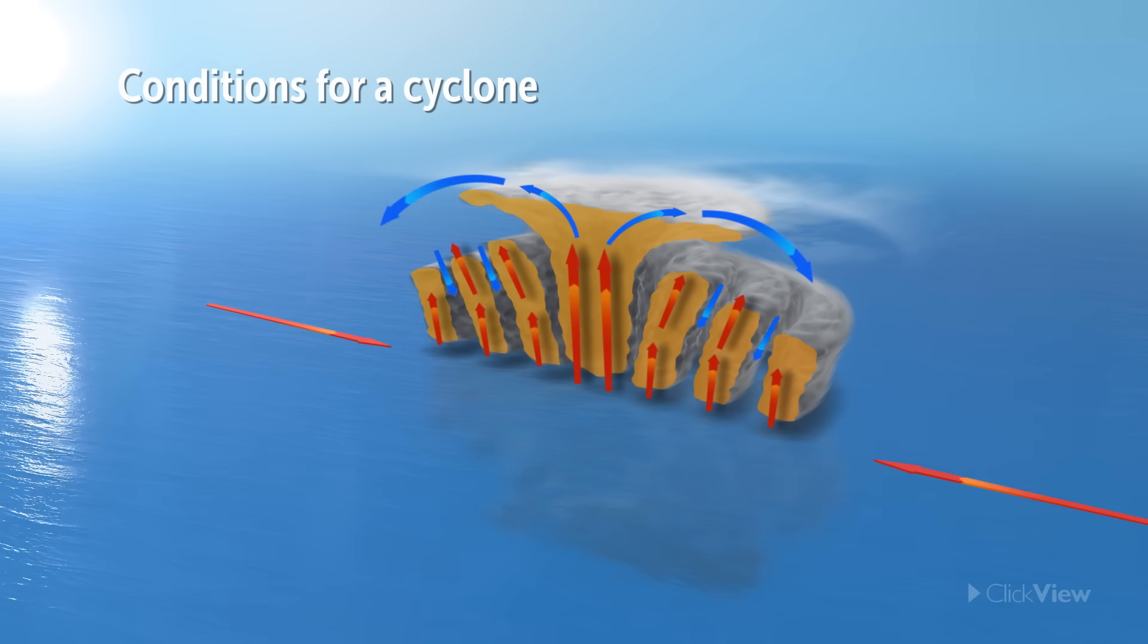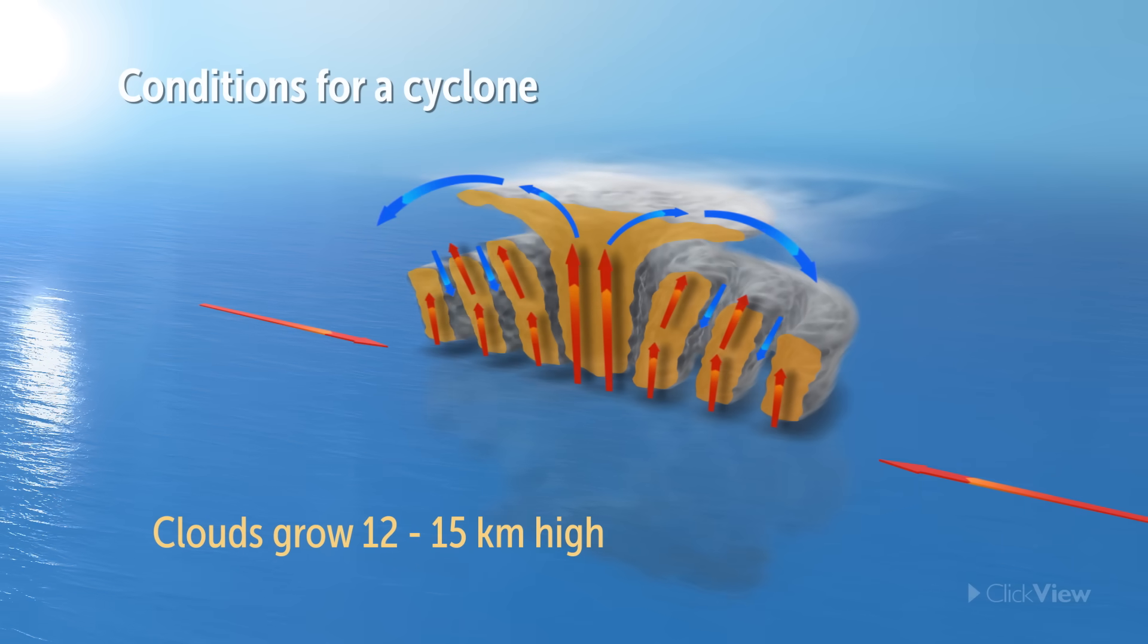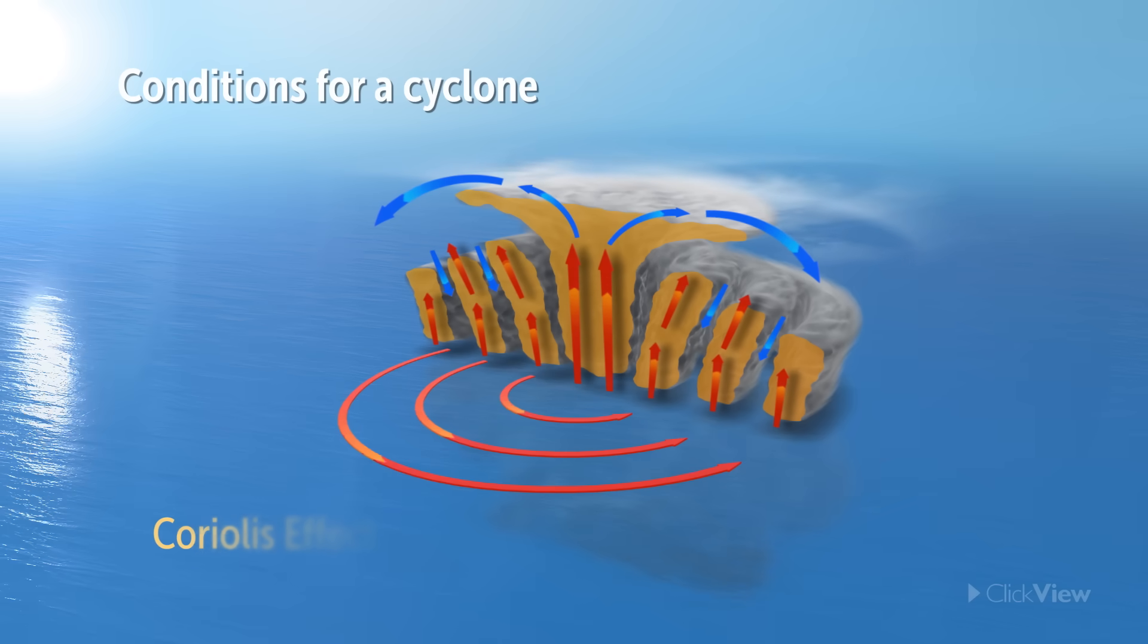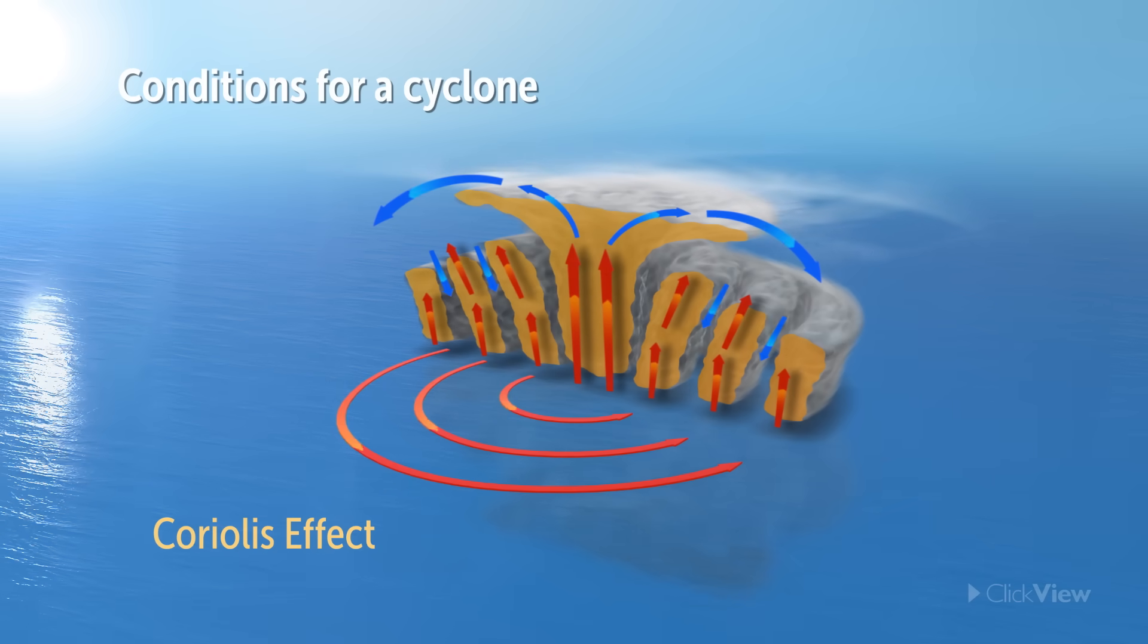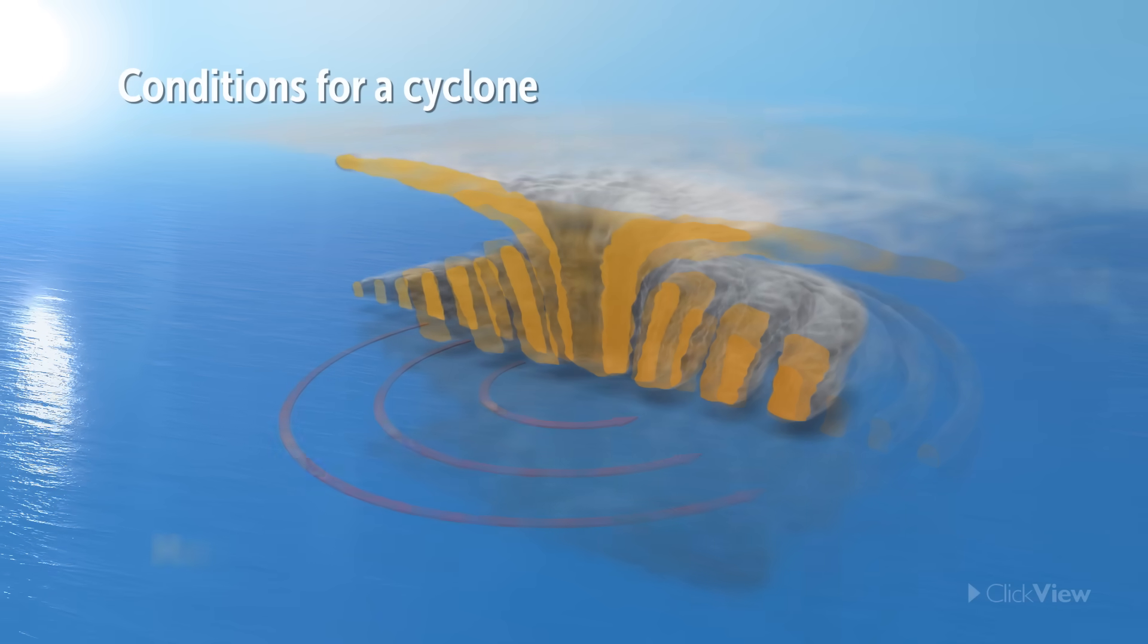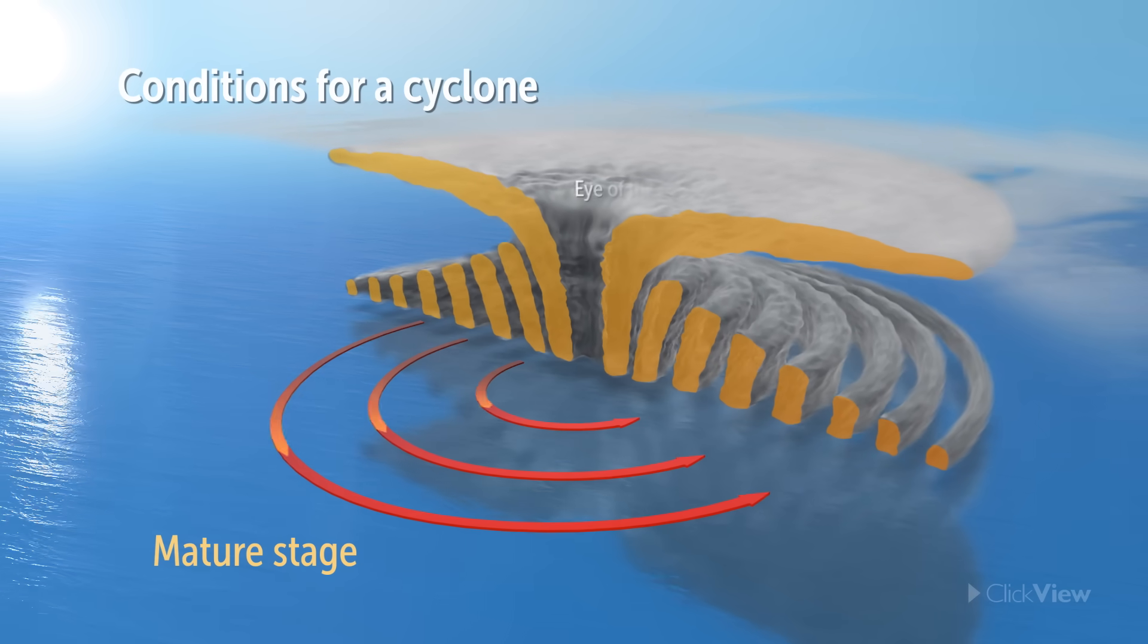Drawn further upwards by the new release of energy, the clouds can grow to 12 to 15 kilometers high. The force created by the Earth's rotation on a tilted axis, the Coriolis effect, causes rising currents of air to spiral around the center of the tropical cyclone. It is at this stage that the cyclone matures and the eye of the storm is created.